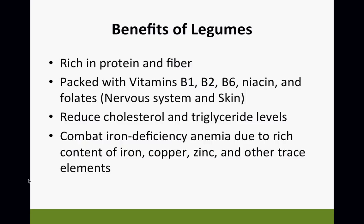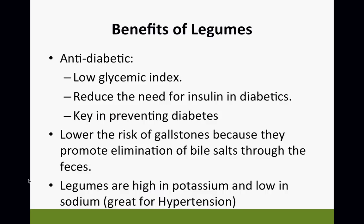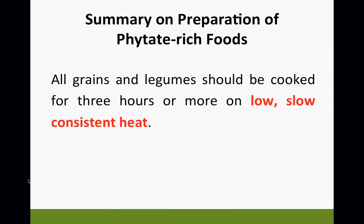Benefits of legumes: they're rich in protein and fiber, packed with vitamins B1, B2, B6, niacin, and folate — good for the nervous system and skin. They reduce cholesterol and triglycerides, help cause blood vessels to relax for better blood flow to the heart, and combat iron-deficiency anemia due to rich content of iron, copper, zinc, and other trace elements. They're excellent for diabetes with a very low glycemic index, reduce the need for insulin, play a major role in reversing and preventing diabetes, lower the risk of gallstones, and are high in potassium and low in sodium — great for high blood pressure.